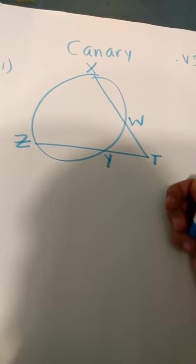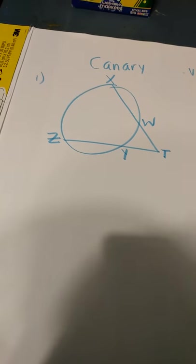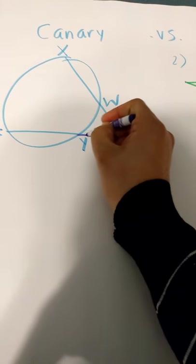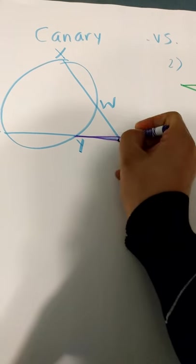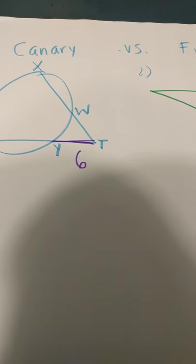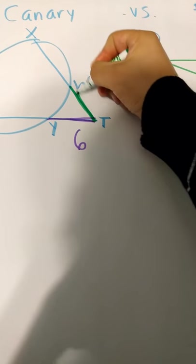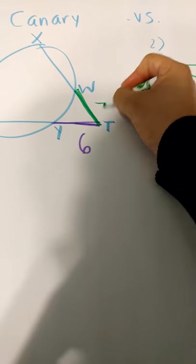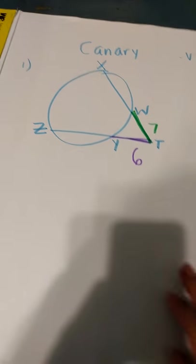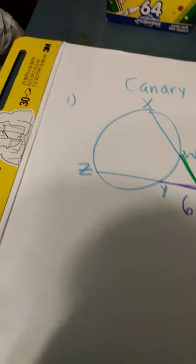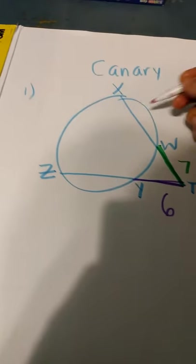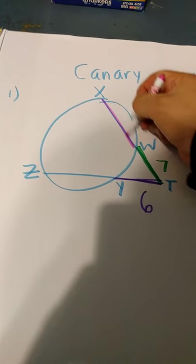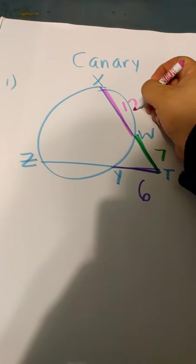Now just like in class, I'm going to use four colors to color code things. Y T, which is right here in purple, is going to be six. In green, the other part of the beak, W T, will be seven. And those in the morning class will realize I made a correction. I was telling you the wrong thing in the morning, it's all the nerves and being live-streamed. This pink part right here is twelve.